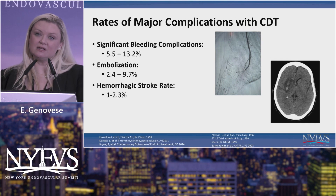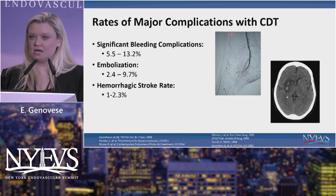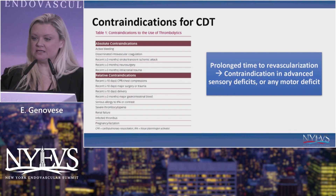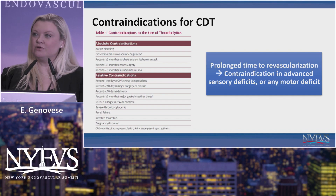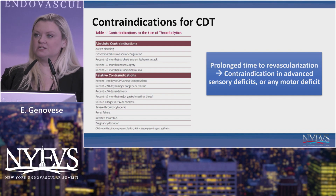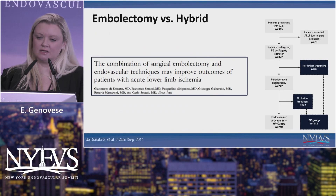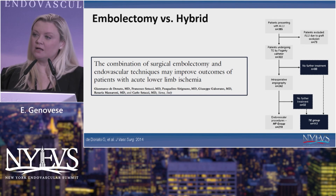Embolization ranges anywhere from 2% to 10%, and hemorrhagic stroke, although rare, is a pretty devastating complication at about 1% to 2%. We know there are certain contraindications for CDT — some are hard, some are more relative. But you've also got to remember that you only have a certain window. If a patient has a pretty severe motor neurodeficit, you're not going to be able to give them time to lyse.